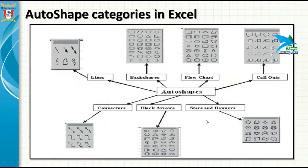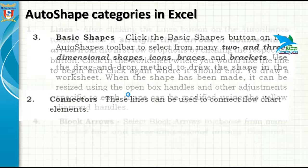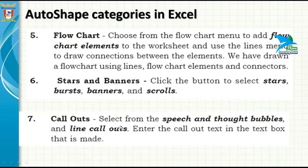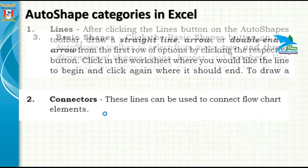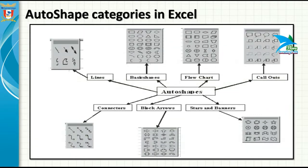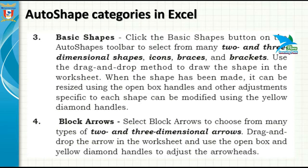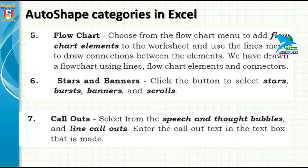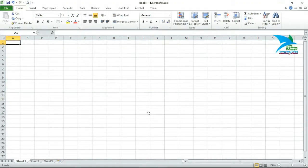Stars and Banners: click the button to select star bursts, bursts, banners, and scrolls if you want to draw star shapes on a spreadsheet. Callouts: select the speech and thought bubbles — with the help of callouts you will be able to add speech and thought bubbles. If you want to display thought bubbles with a graphical shape, you can use the speech or thought bubble option from auto shapes in Excel.